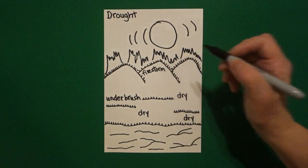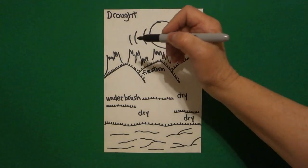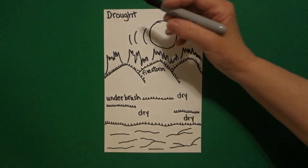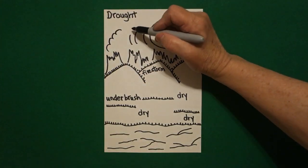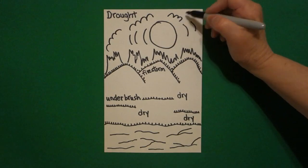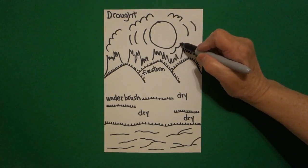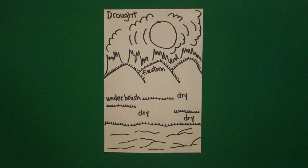See, what happens is, it gets so dry from the drought, and no water, and the plants, the underbrush is so dry, that it only takes the beginning of a fire. So now I'm putting some curve lines, this is going to be my smoke, curve line, curve line.